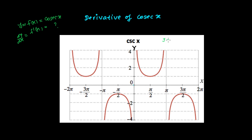Our function is y equals cosecant of x. We are very familiar with the word derivative. The derivative of a function at a point is simply the slope of the tangent drawn at that point. So at this point, if I want to find the derivative, I first need to draw the tangent here and find its slope.